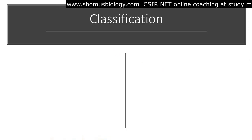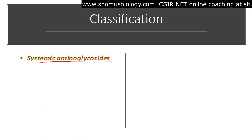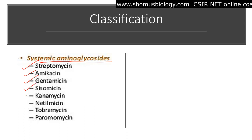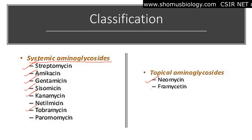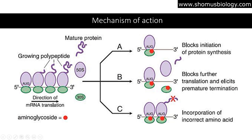Classification of aminoglycosides can be divided into two types: systemic and topical. For systemic type we have streptomycin, amikacin, gentamicin, sisomycin, kanamycin, and tobramycin. For topical use, the examples are neomycin and framycetin. Neomycin in particular is used for skin infections.